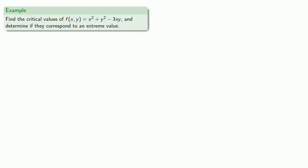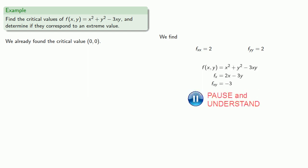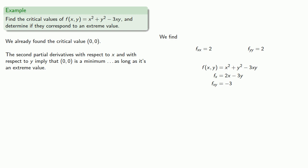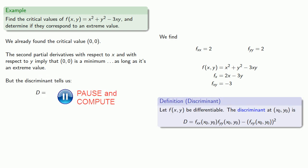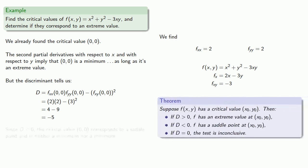We already know the answer to this question, but let's apply our discriminant. We already found the critical value zero, zero, and we've already found the second partial derivatives with respect to x and with respect to y. So we just need to find that mixed partial derivative. The second partial derivatives with respect to x and with respect to y indicate that zero, zero is a minimum as long as it's an extreme value. To decide, we compute the discriminant. Since the discriminant is less than zero, the critical value corresponds to a saddle point and is neither a maximum nor a minimum.